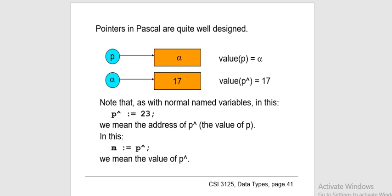Integer pointers point to an integer value, declared as int *ptr. A pointer can point to any primitive data type. It can also point to derived data types such as arrays and user-defined data types such as structures. Array pointers: pointers and arrays are closely related — even the array name is a pointer to its first element. They are also known as pointers to arrays. We can create a pointer to array using a specific syntax, which exhibits some interesting properties.